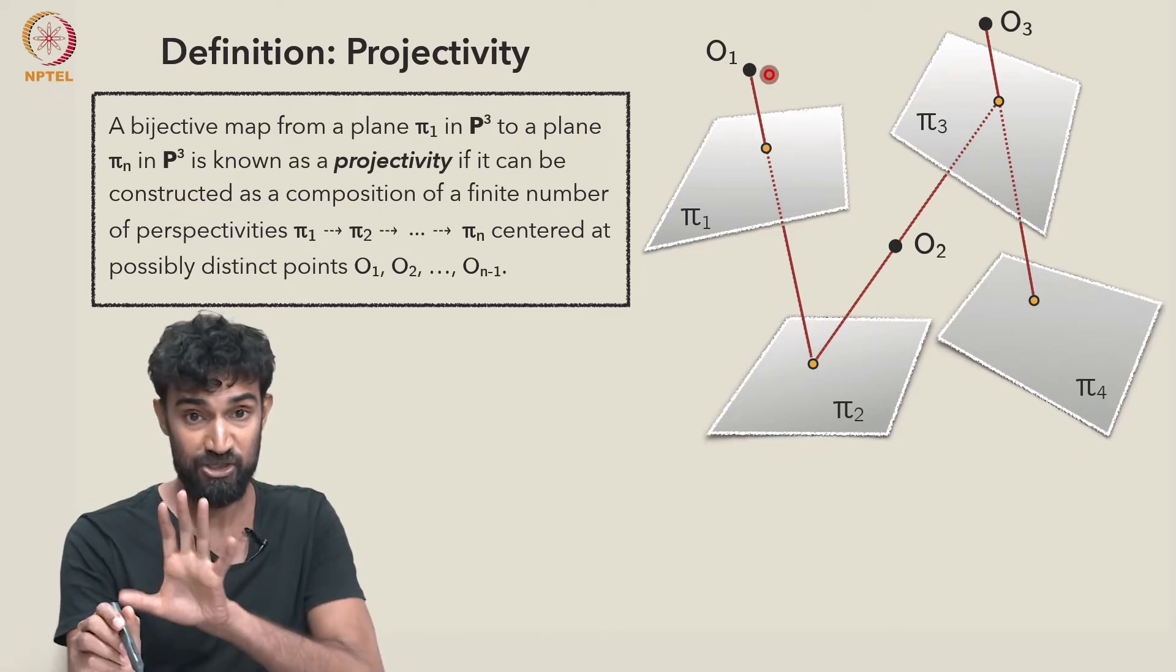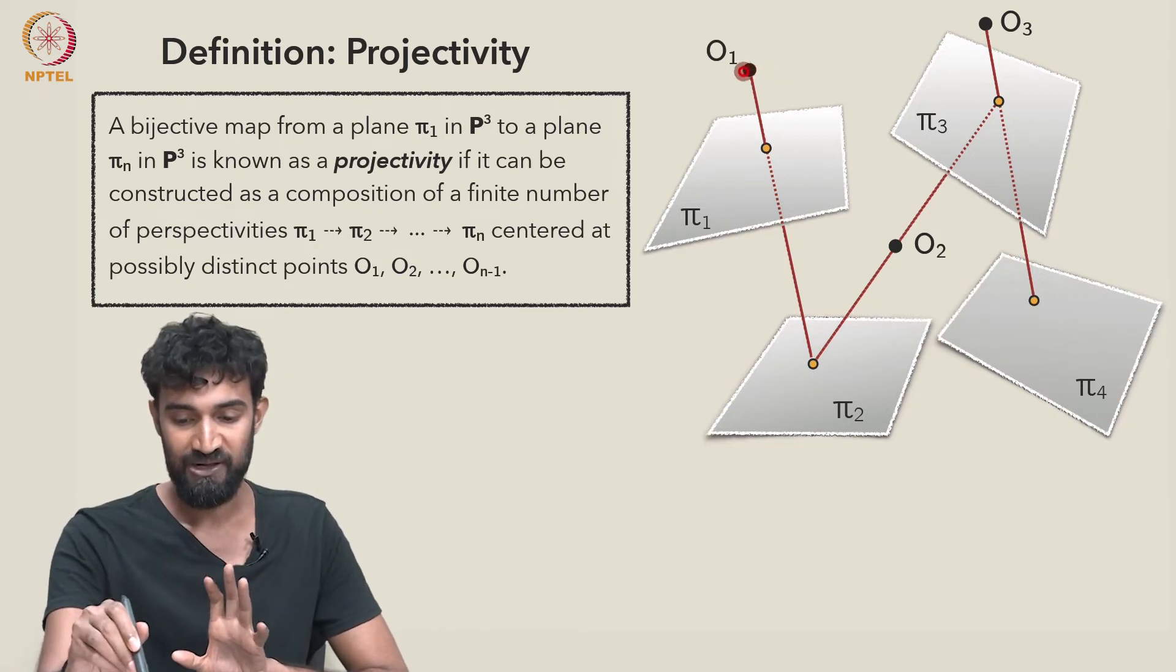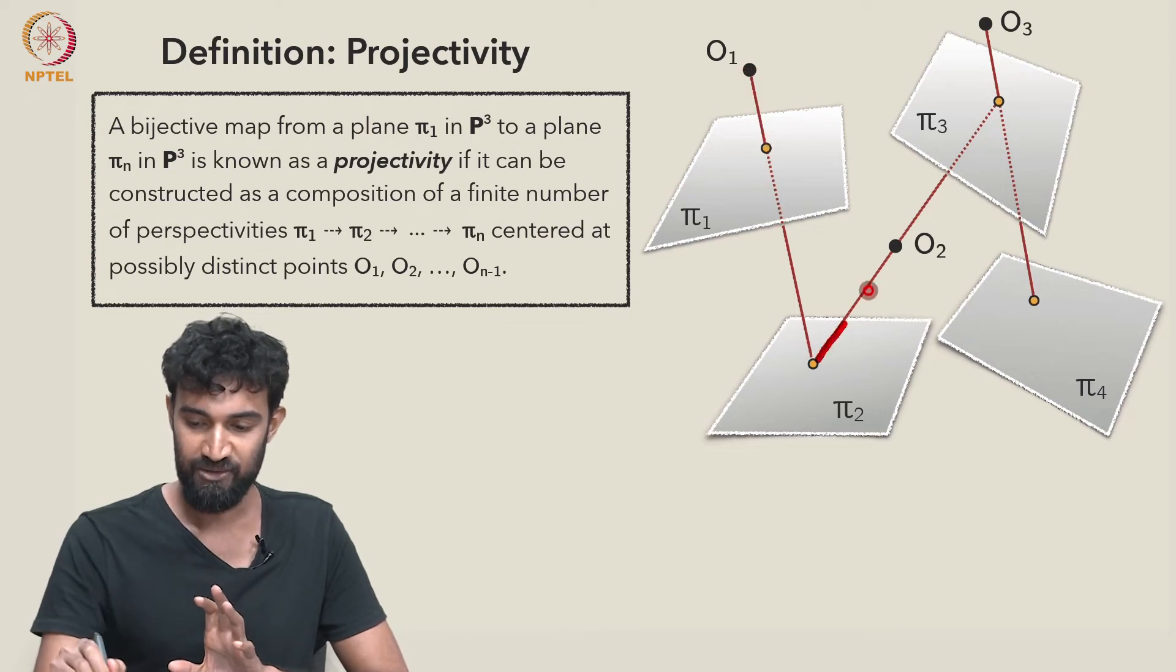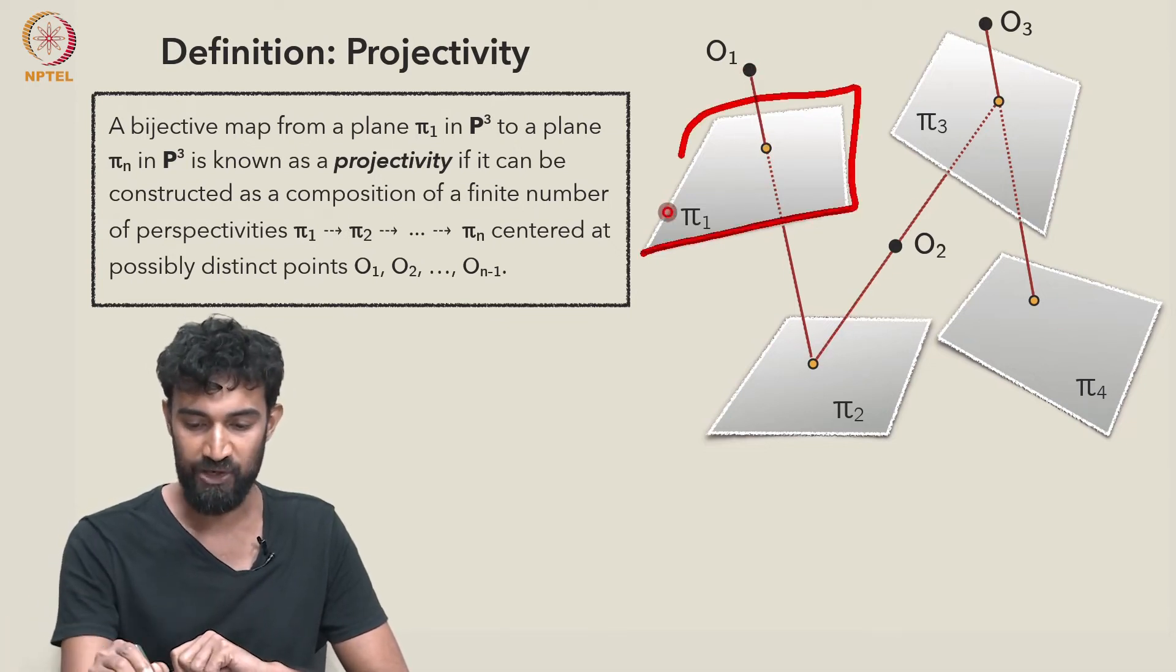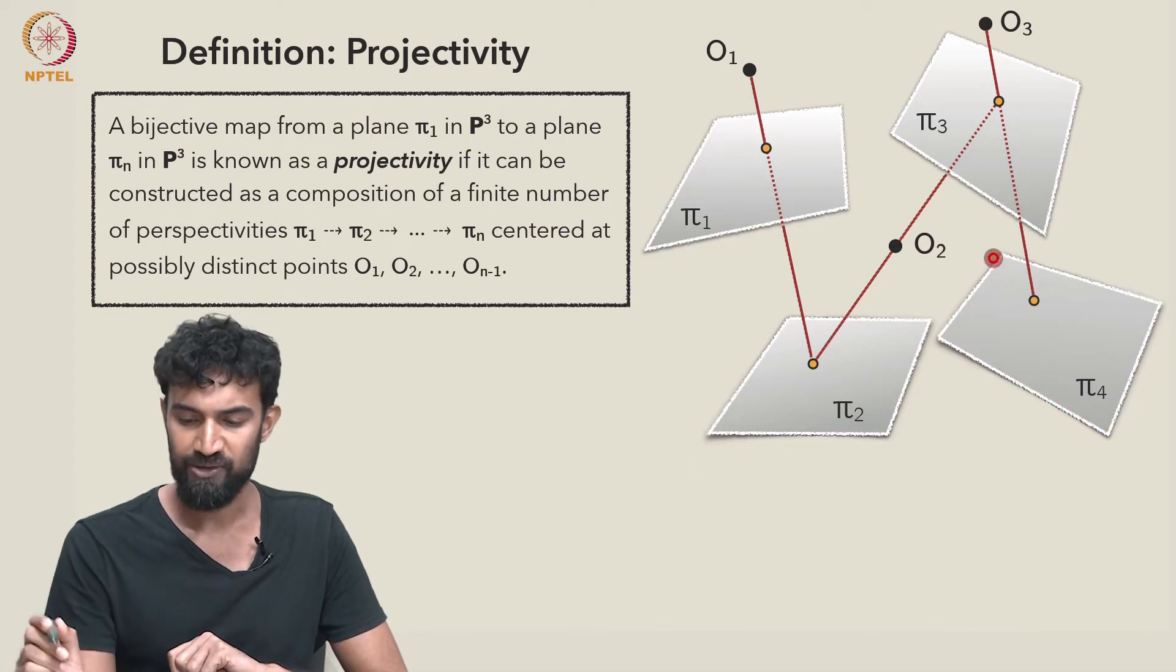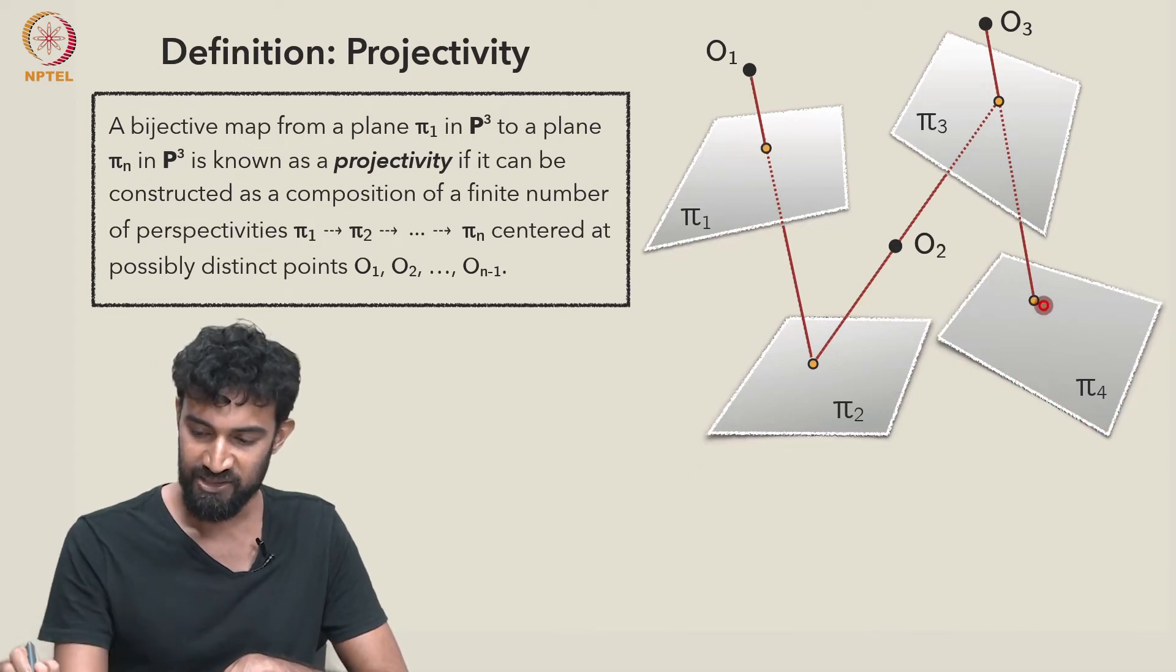So this composition in this example, there's a composition of three perspectivities mapping the plane π₁ to the plane π₄, and taking this point here to this point here.